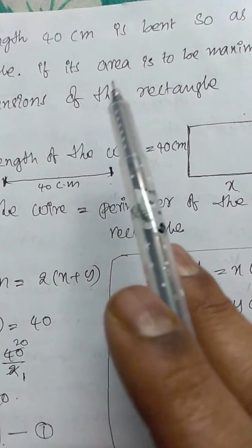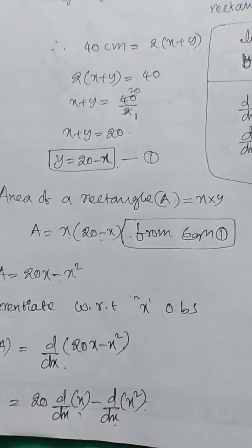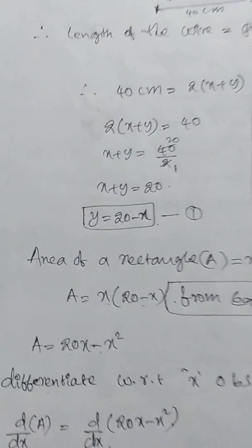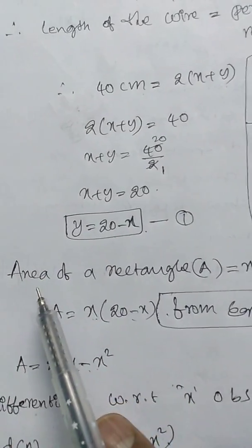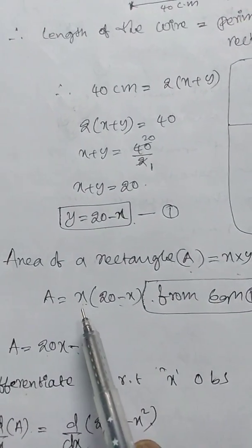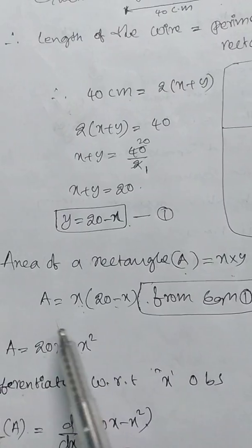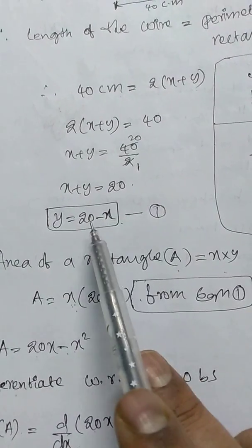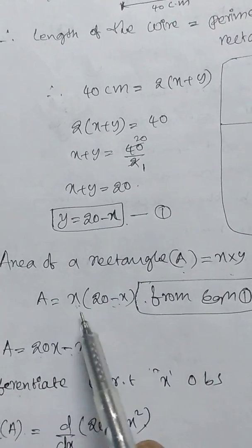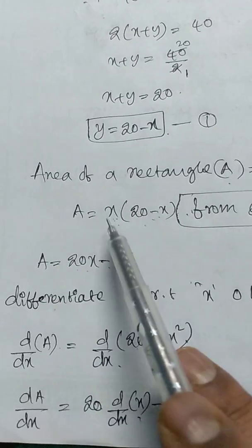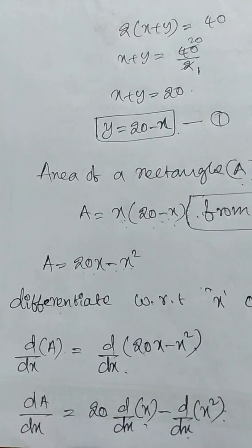Now we have to prove the area of the rectangle is maximum, so we have to differentiate. Consider area of a rectangle = length × breadth, so A = x · y. From equation 1, y = 20 - x, so A = x(20 - x) = 20x - x².